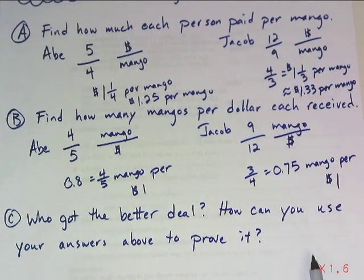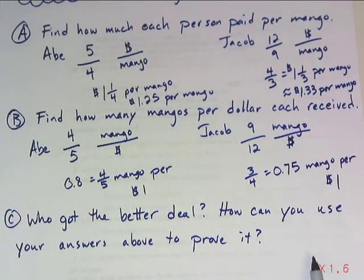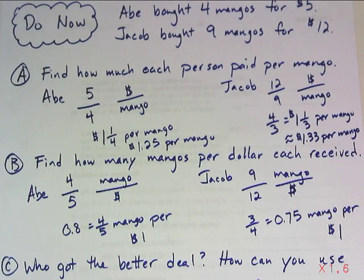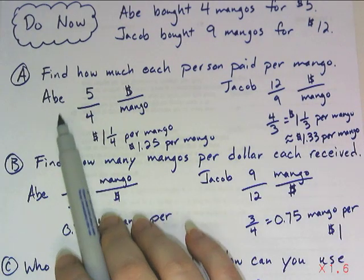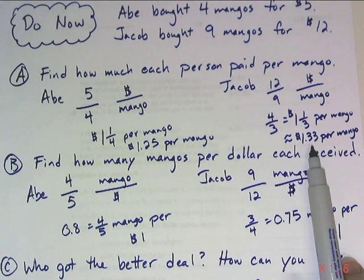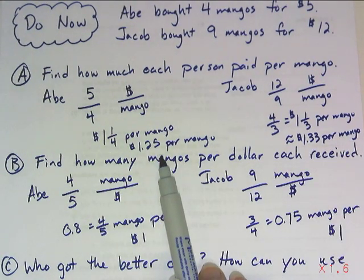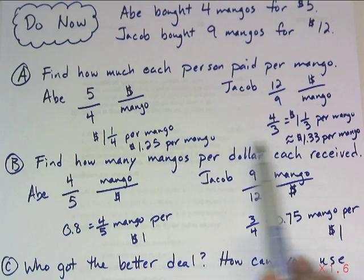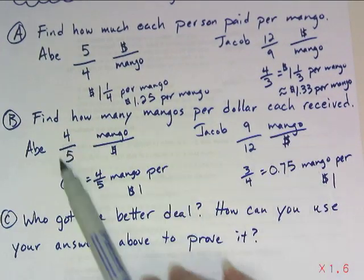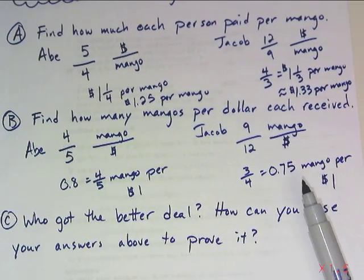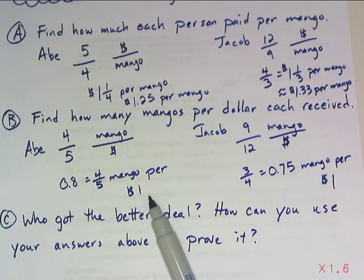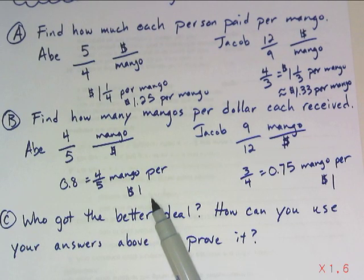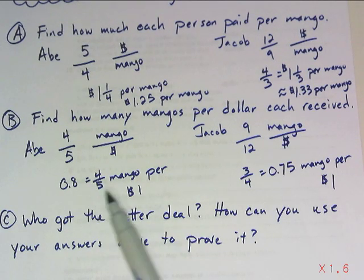So who got the better deal? Well, what do you think? I think Abe got the better deal. He's paying less per mango. So I can use my answer to part A to say that Abe got the better deal since he's paying less per mango. I can also use my answer to letter B. I just have to think a little bit differently.